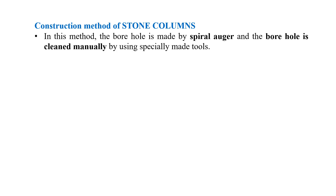At the time of construction of stone columns, we used the spiral auger for making boreholes. In this method, the borehole is made by a spiral auger and the borehole is cleaned manually by using specially made tools.